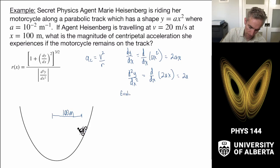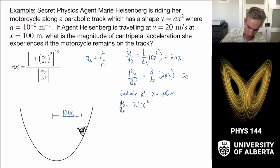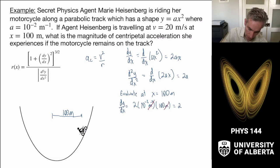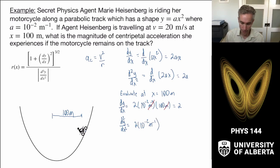Now we evaluate at x equals 100 meters. So dy/dx at that point is 2ax, and plugging in a equals 10 to the minus 2 inverse meters and x equals 100 meters, that's 2 times 10⁻² times 100, which has a value of 2 — the meters inverse and the meters cancel out. The second derivative d²y/dx² evaluated is just 2a, which is 2 times 10 to the minus 2 inverse meters.